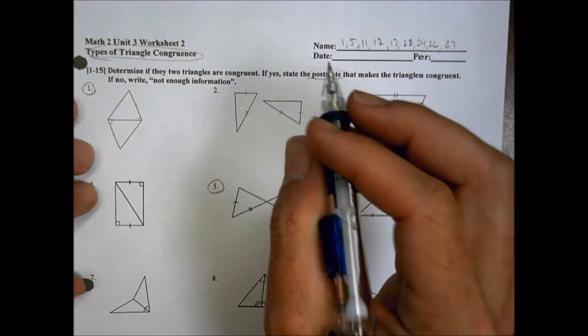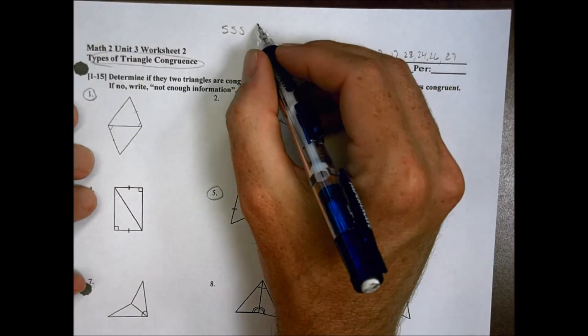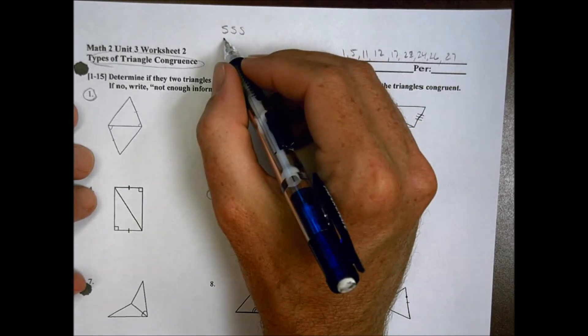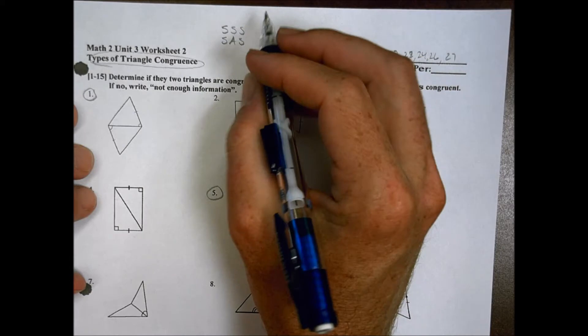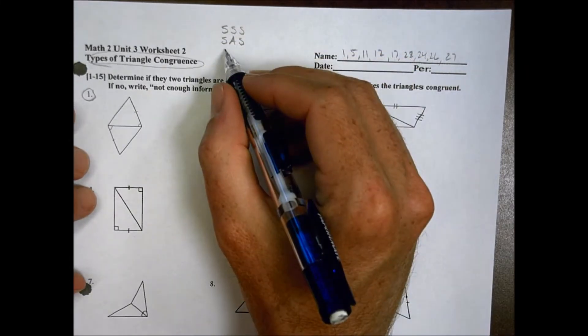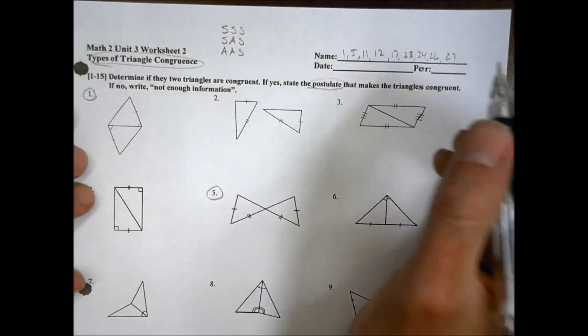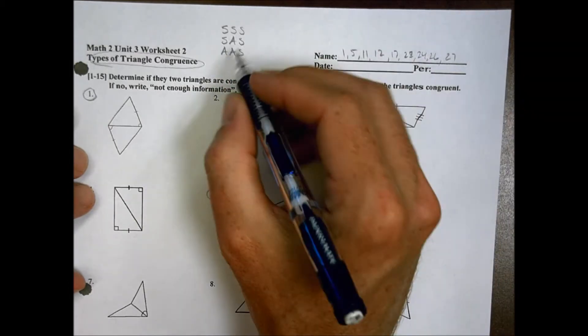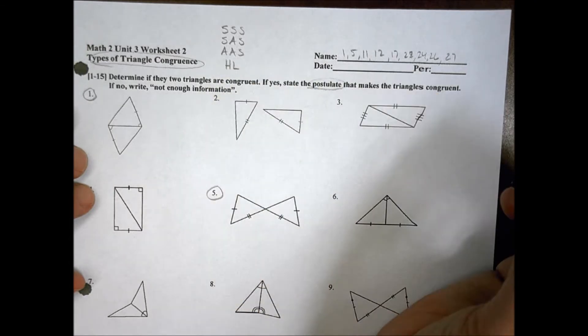The different ones you had as options today might be things like side-side-side. We have three sides all the same. You could have side-angle-side, that one comes up often. And you could have angle-angle-side, that can work as well. You might have talked today about the hypotenuse leg theorem.